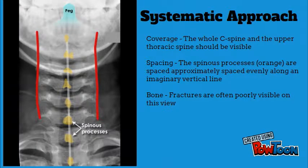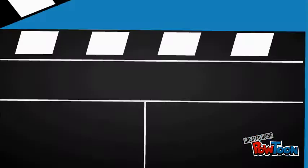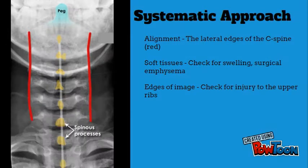Check that the coverage is adequate. Look at the spacing between the spinous processes, and then look at the bone — note that fractures are often poorly seen in this view. Check the alignment, the soft tissues, and the edges of the image.